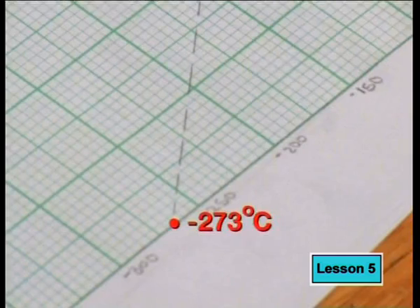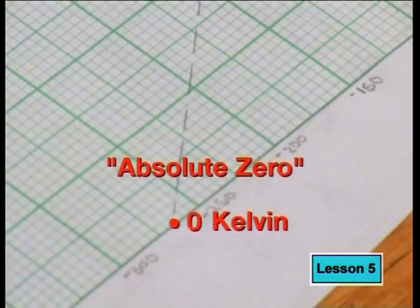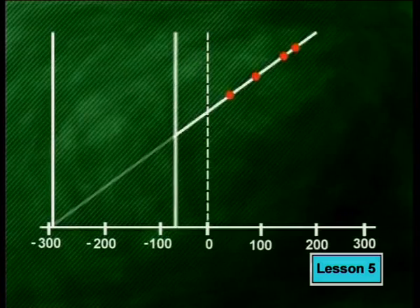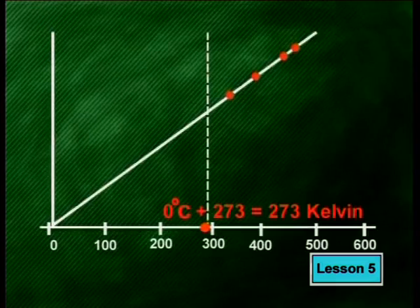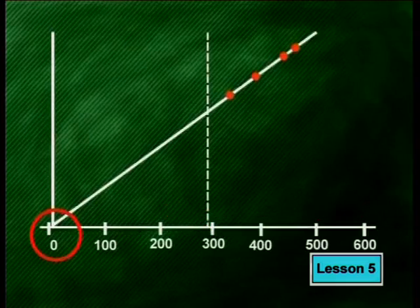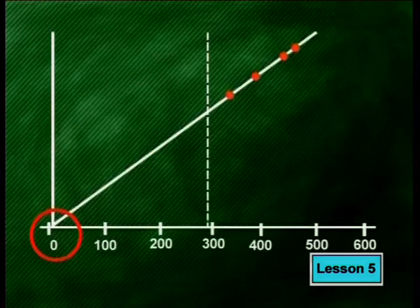Experiments have shown this temperature to be minus 273 degrees Celsius. Because all the Kelvin scale does is move the zero position 273 places to the left, you simply have to add 273 to your Celsius reading if you want to convert to a temperature reading in Kelvin. As soon as you do that, you will find that the graph of pressure against temperature in Kelvin now gives you a straight line graph that passes through the origin. So pressure is directly proportional to temperature, but only if temperature is measured in Kelvin.